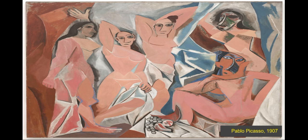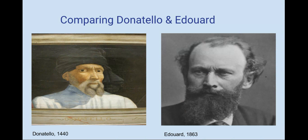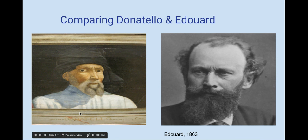Here I will be comparing Donatello's David and Manet's Olympia. Donatello di Niccolò di Betto Bardi was born in Florence, Italy in the 1430s. He worked with Lorenzo Ghiberti, a well-known artist in Florence. Donatello was also educated at the Martelli home, which was tied to the Medici family.